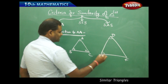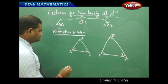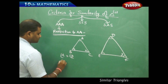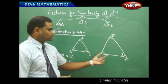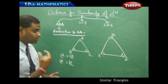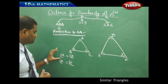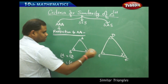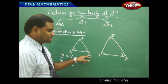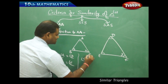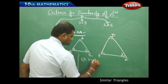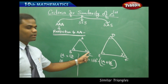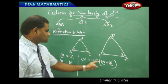Let me take this as angle X and this as angle Y, and then I clearly understand that angle A equals angle D and angle B equals angle E. Let's try and see if the third angle can also be equal based on the minimized condition of the two angles. Since angle A is equal to angle D and angle B is equal to angle E, angle C is nothing but 180 minus (angle A plus angle B), because the sum of three angles of a triangle is 180.